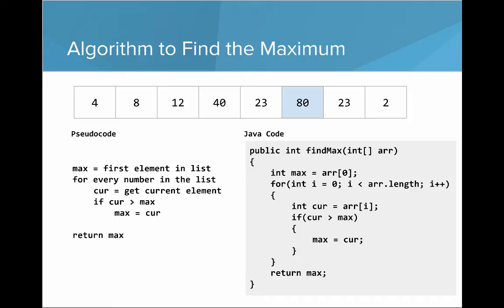We'll say that the max element is the first element in the list, and then for every number in the list, we'll get that current element, and if that current element is greater than the maximum, then set the maximum equal to the current element, and then return the maximum.